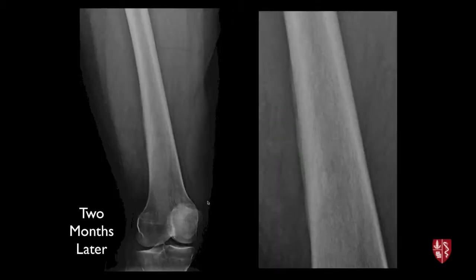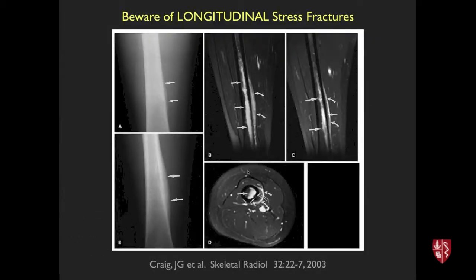The critical point: fractures can be transverse or longitudinal along cortical bone. A literature case similarly shows extensive periosteal reaction that eventually matures on radiographs. Longitudinal stress fractures occur in both the femur and the tibia and must be recognized.